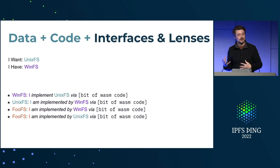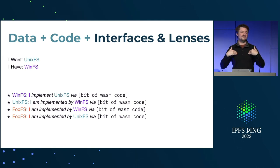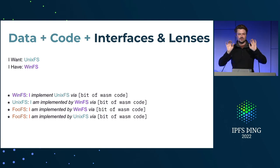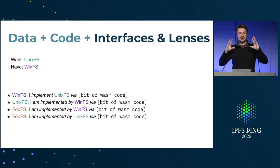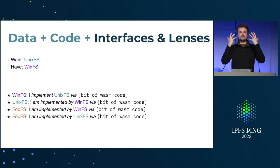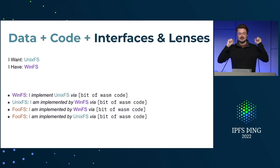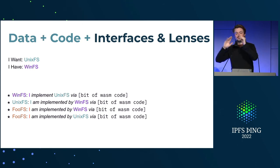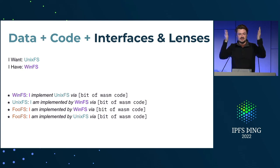You can also do this with a third party. Let's say I don't care about either — I want FooFS, some other file system. I can create my new interface because I like my interface and I don't like yours. I want to paint my shed red. I have a purple shed and a teal shed. My red shed is implemented by the purple shed via some Wasm code, and it's implemented by UnixFS via this other Wasm code. Now if you give me any of these types of objects, I can just understand them in my program via these lenses.